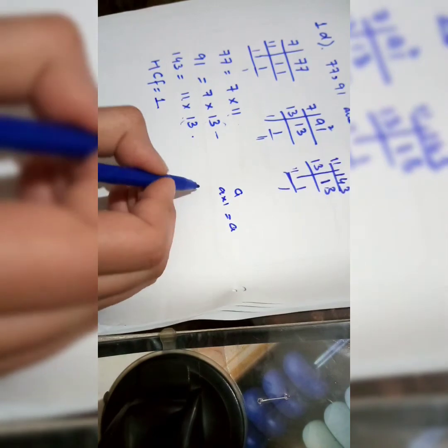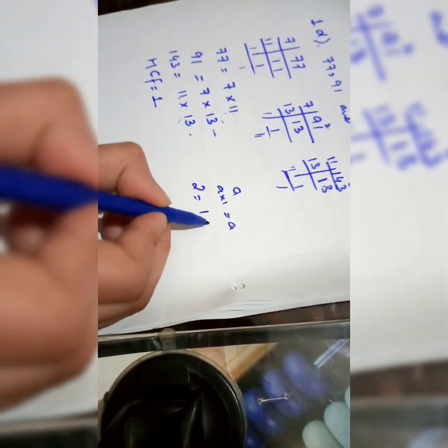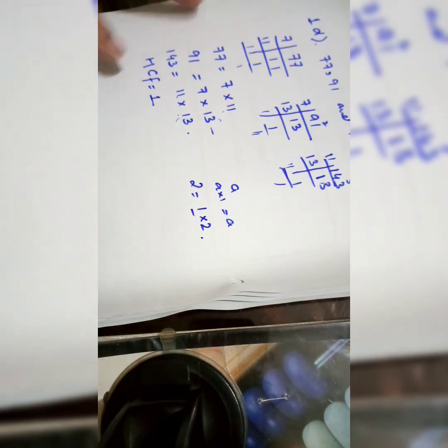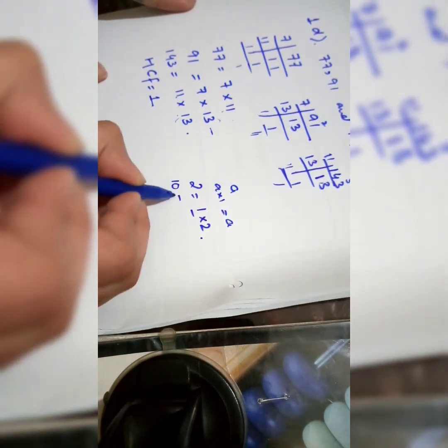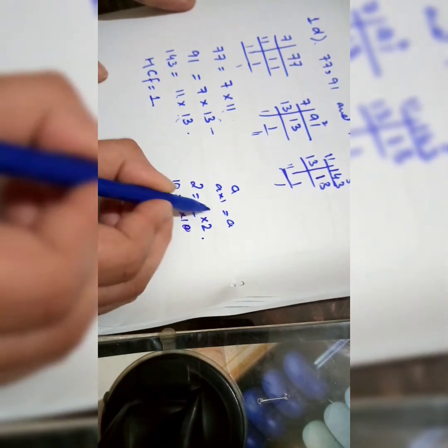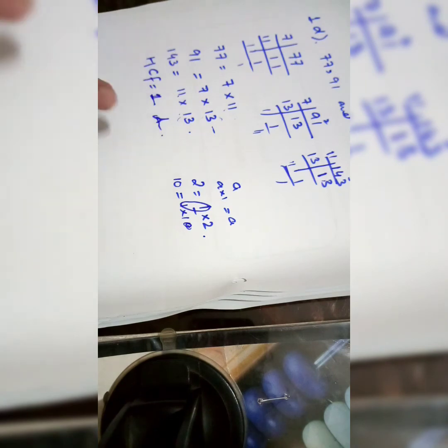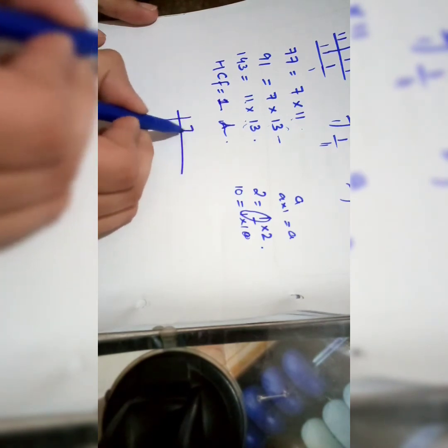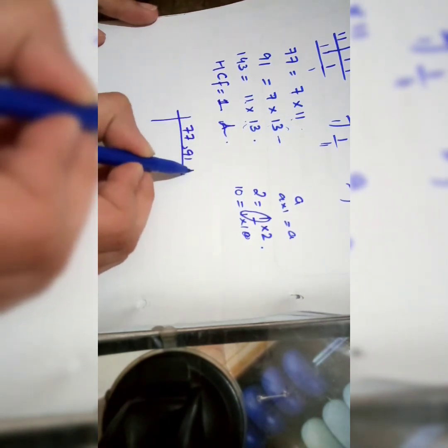Since 1 is always a factor of any number — for example, factors of 2 are 1 multiplied by 2, and factors of 10 are 1 multiplied by 10 — we can take 1 as the common factor. So the HCF of 77, 91, and 143 is 1. Using the table method, there is no common table in which 77, 91, and 143 are all divisible except the table of 1. So the HCF is 1.